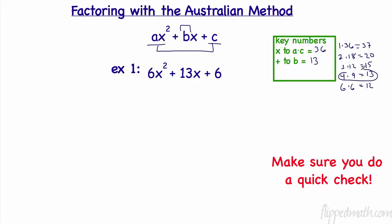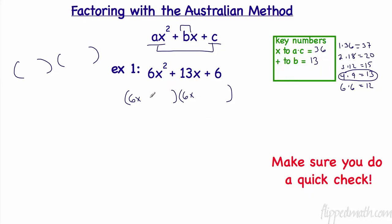Here we go with the Australian method. We know we'll end up with a binomial times a binomial. We need to multiply some x times some x to get x squared, so I'll start by putting 6x in the front of both binomials. Now 6x times 6x gives 36x squared — that's too much by a factor of 6 — so I'll need to divide by 6 to cancel that extra factor.